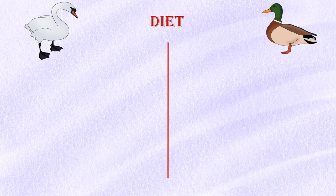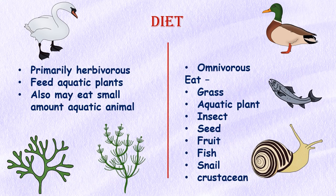Diet: Swans are primarily herbivorous, feeding on aquatic plants, although they may eat small amounts of aquatic animals. Their longer necks allow them to reach deeper into the water to feed on submerged plants. On the other hand, ducks are omnivorous and will eat grass, aquatic plants, insects, seeds, fruit, fish, snail, crustaceans, and other types of food.